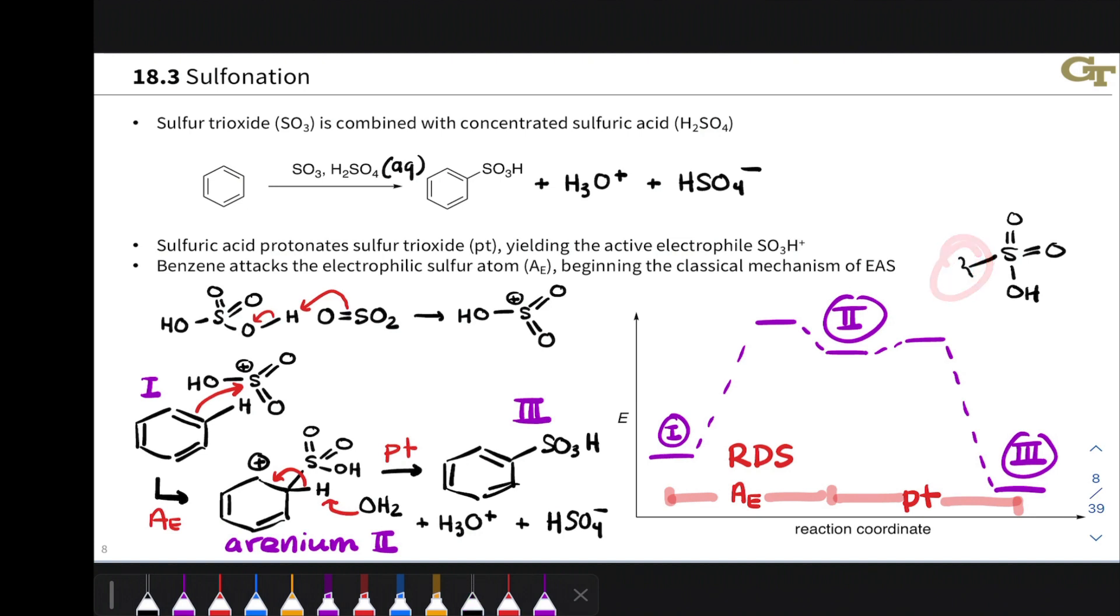This is the sulfonic acid group, and compounds containing this functional group are commonly called sulfonic acids. Some you may have seen before, like toluene sulfonic acid, methyl sulfonic acid, and trifluoromethyl sulfonic acid or triflic acid, are common examples of sulfonic acids you may have seen before.